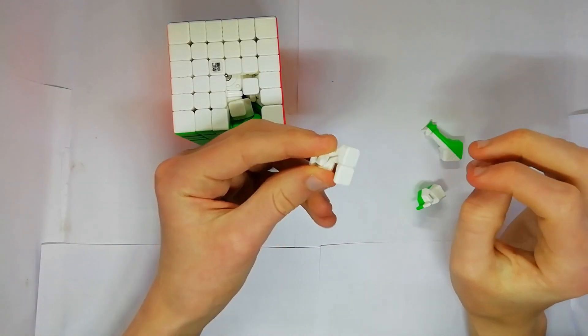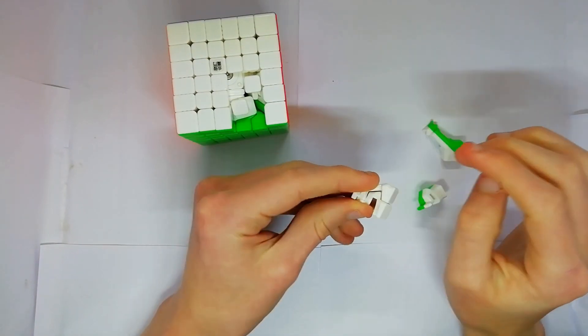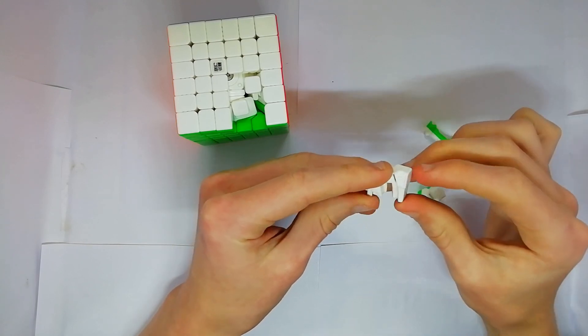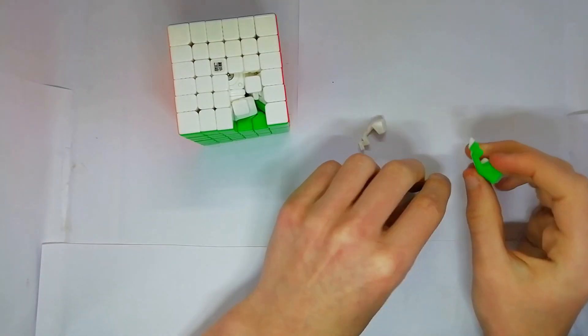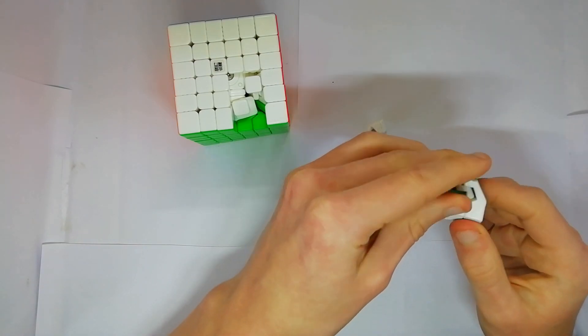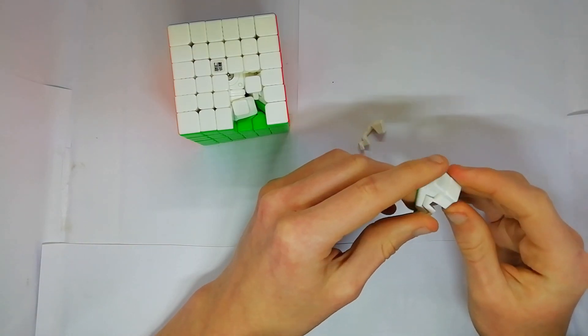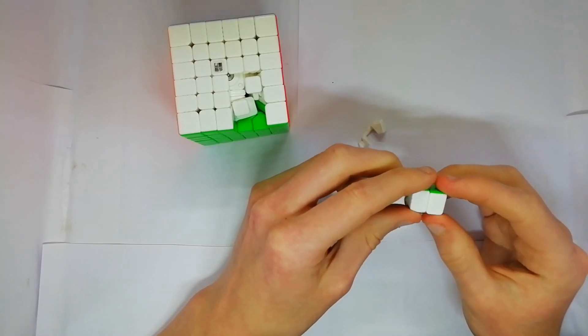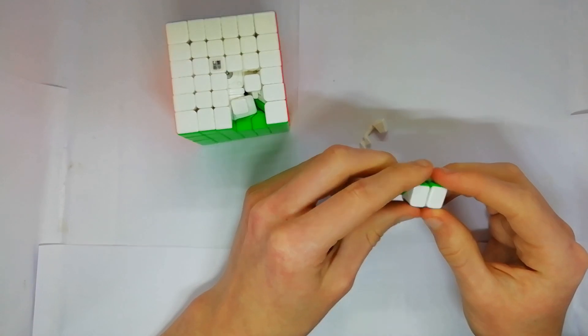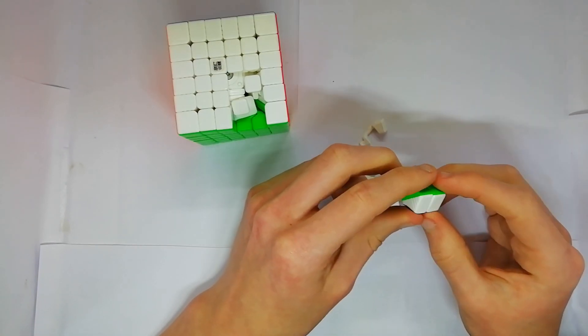So the pieces are pretty standard 6x6 pieces. They allow for easy sliding around and I think it's designed so that there is very little friction. The waves there are for speed and I think that's the main difference between this and the Aoshi GTSM.